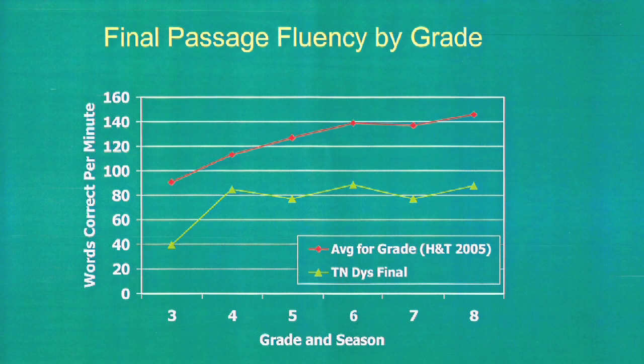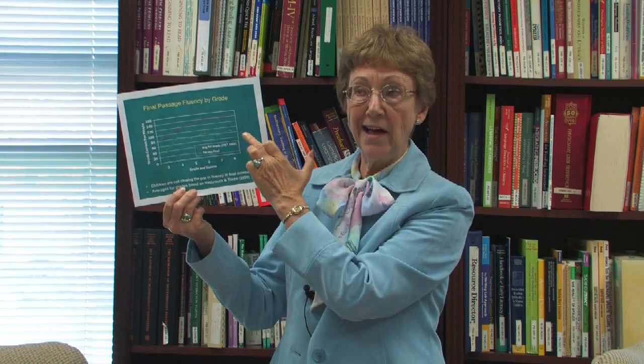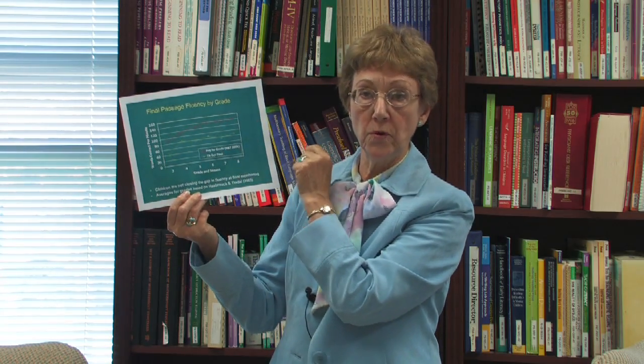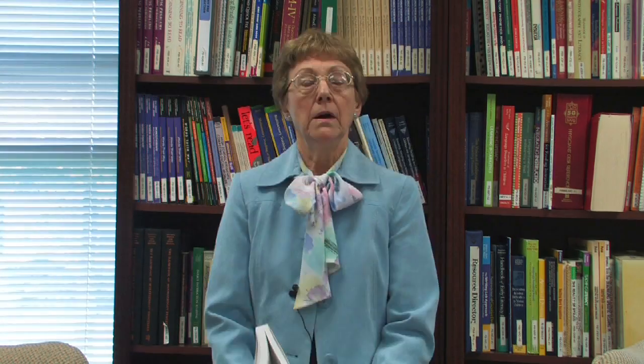These children in the green line are dyslexics, and you see that from the very beginning they are much slower in their ability. Not that they cannot read the words, but they are much slower in their recall of the words even when they know them.